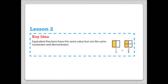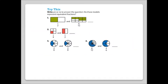Lesson 2 Key Idea: Equivalent fractions have the same value, but not the same numerator and denominator. Try this — write yes or no to answer whether the models represent equivalent fractions. Number 1: one-half and six-twelfths. This one's a little tricky, so visualize it — one-half and six-twelfths are equivalent fractions.